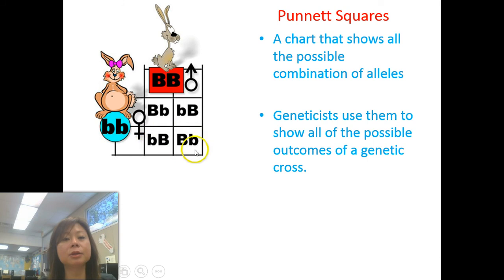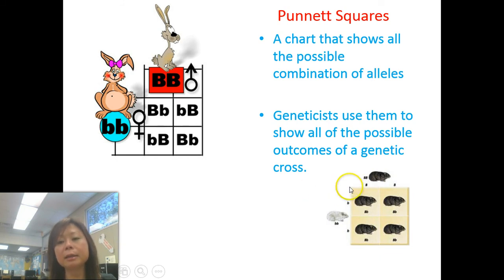So if you had two parents, one with capital B, capital B, and one with lowercase b, lowercase b, all of their offspring will have one capital B and one lowercase b. This picture is in your textbook. The capital B, capital B stood for black fur, and lowercase b, lowercase b stood for white fur. As it turns out, all of their offspring had black fur.